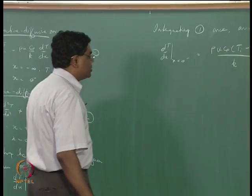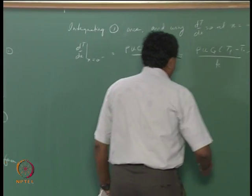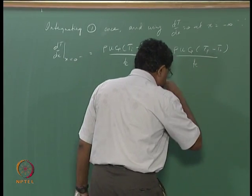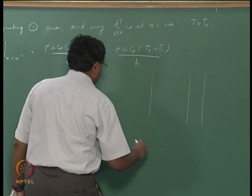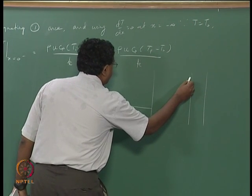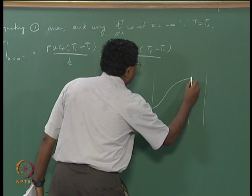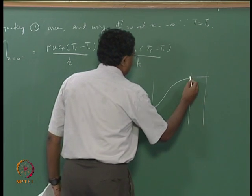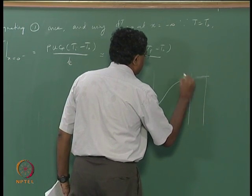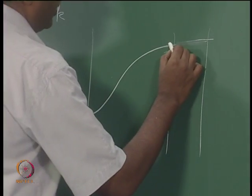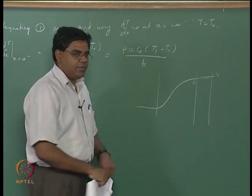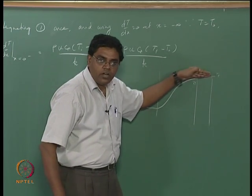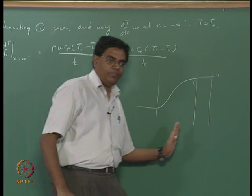The key issue is the phrase 'without incurring too much error,' so let us look at how Tf departs from Ti. If you look at the preheat zone and the reaction zone, the temperature Ti is very close to Tf. The only difference is that the temperature climbs a little bit more within the reaction zone before leveling off at constant slope at the end of the flame thickness.